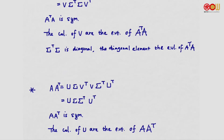Similarly, we can consider the product A A-transpose. We write A and then A-transpose, which is V sigma-transpose U-transpose. This time, sitting in the middle is V V-transpose, which becomes identity. We are left with U sigma sigma-transpose U-transpose. The matrix sigma sigma-transpose is now an m by m diagonal matrix.